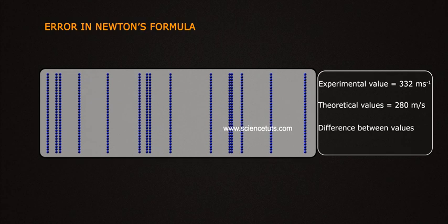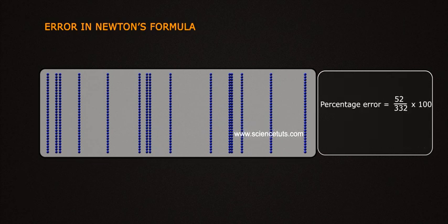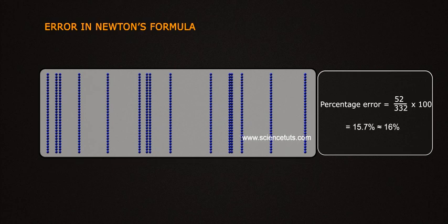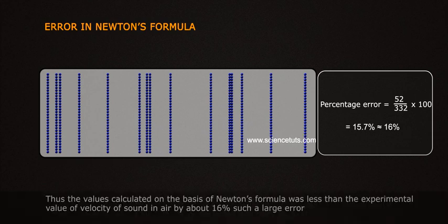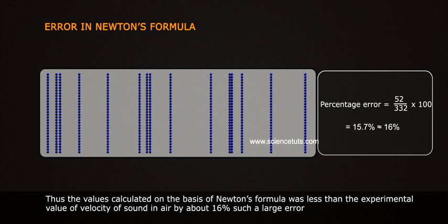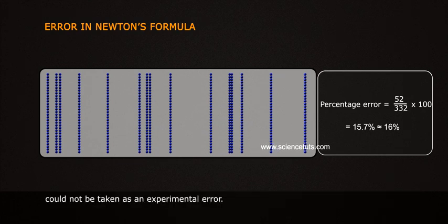The difference between the experimental and theoretical values equals 332 minus 280, which equals 52 m/s. The percentage error equals 52 by 332 into 100, which equals 15.7%, approximately 16%. Thus, the value calculated on the basis of Newton's formula was less than the experimental value of velocity of sound in air by about 16%. Such a large error could not be taken as an experimental error.